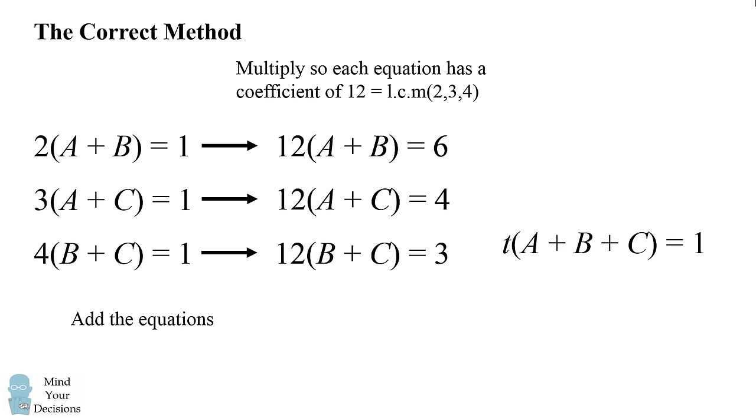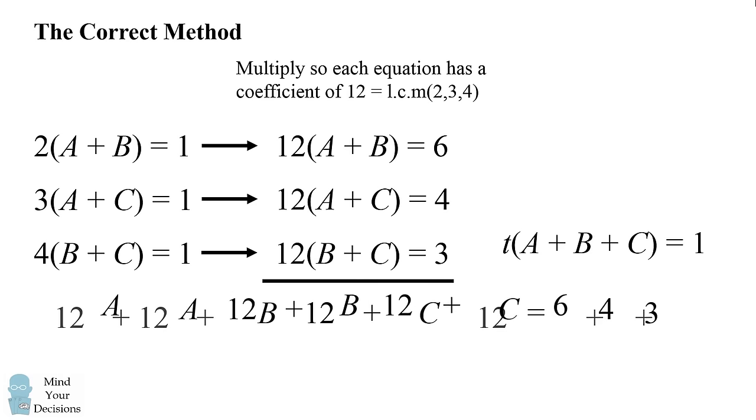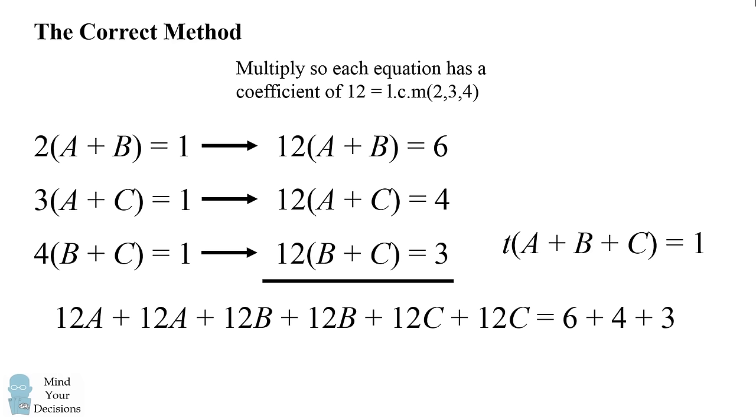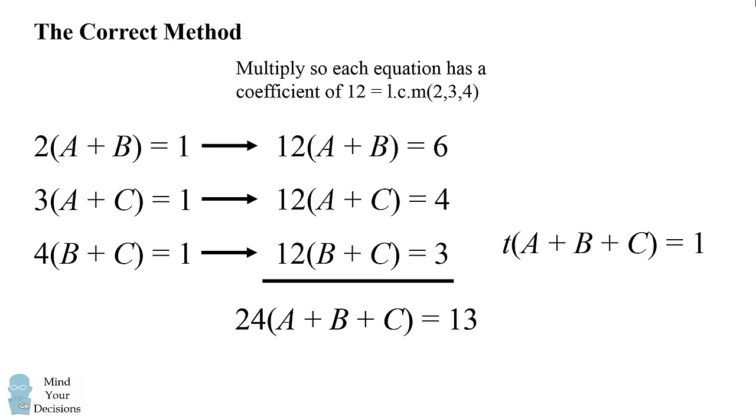We can now add up all of these equations. We'll end up with 12A two times, 12B two times, and 12C two times, and this will be equal to 6 plus 4 plus 3. We can factor out the 24 of each of these variables, and that will be equal to 6 plus 4 plus 3, which equals 13. We now divide by 13, and we end up with 24 divided by 13 times the quantity A plus B plus C equals 1. And that is what we wanted to figure out.